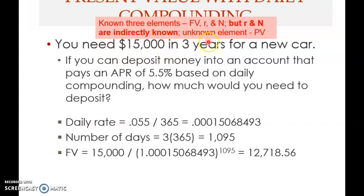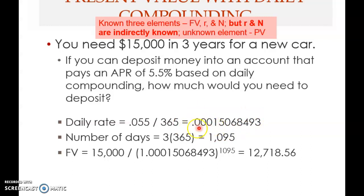The three known elements: future value = $15,000 in three years; r is indirectly known as 5.5% ÷ 365 because it's daily compounding with 365 days per year; N is indirectly known — it's given as three years but since it's not compounded yearly, you need the term in number of days.